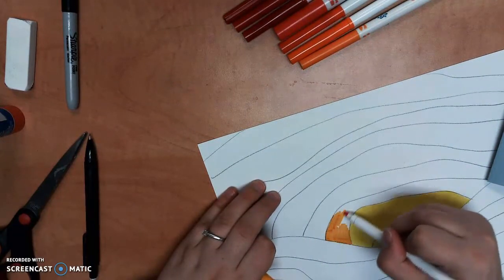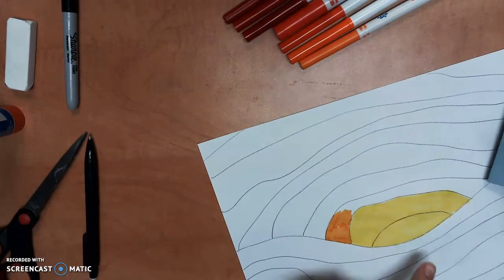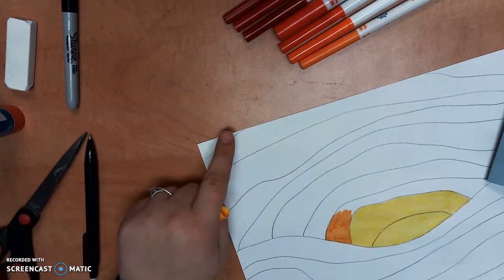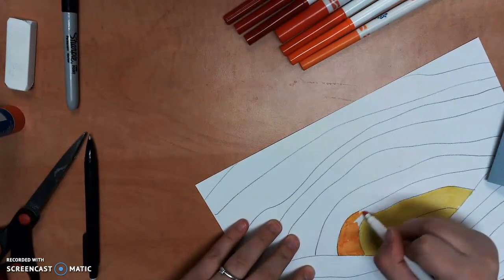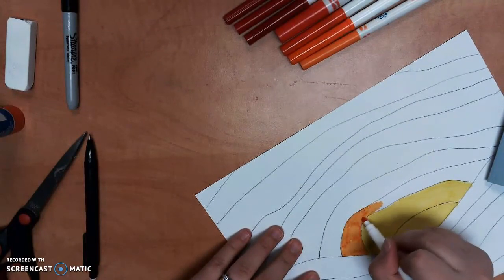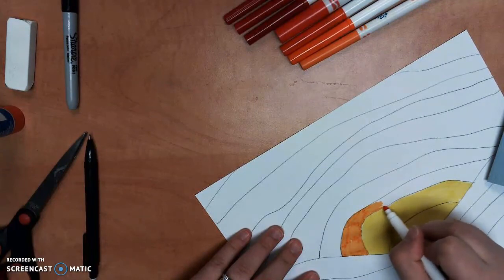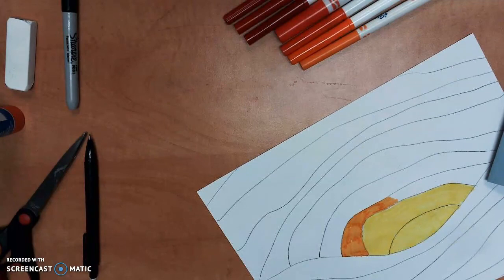Now sometimes we see in Ted Harrison's art, he will start with light, go dark, and then light again. So you could also do that. All right, so I'm going to keep coloring. I'll pause the video. And if you want to continue coloring as well, I'll see you after we have our sky all colored.